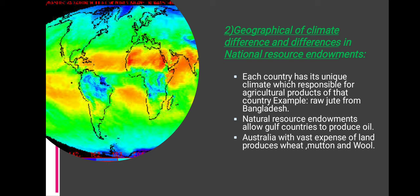The next point is geographical and climate differences and differences in natural resource endowment. Each country has its unique climate which is responsible for the agricultural products of that country. For example, jute from Bangladesh; natural resource endowment allows Gulf countries to produce oil; Australia with its vast expanses of land produces wheat, mutton, and wool.